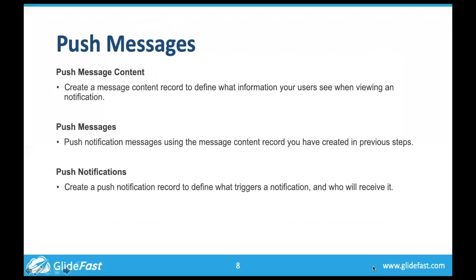Push messages work the same way as any other push notification — like when Facebook notifies you that someone posted on your wall. There are three different pieces: the push message content, where you define what the user is going to see; the push message, where you define the message content you created; and the send trigger configuration, which works similarly to an email notification — for example, when a task gets assigned to you, you want it to notify you within the app as well.